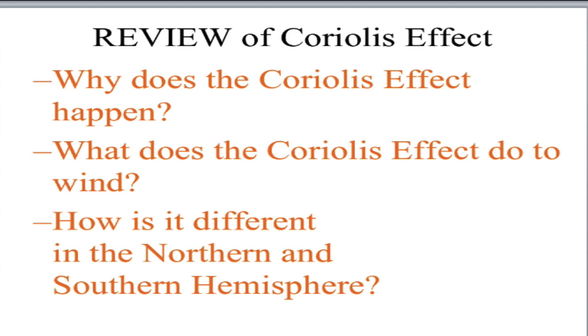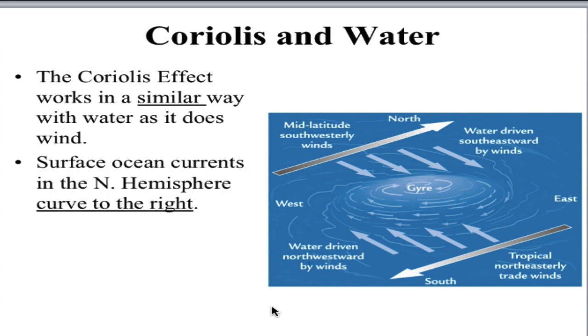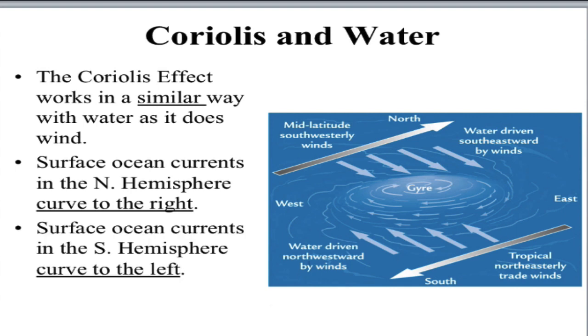Now, the Coriolis effect happens due to Earth's rotation. Let's not forget about that. It causes air to curve or bend to the right in the northern hemisphere and to the left in the southern hemisphere. Now, let's see how that impacts water. So hopefully you were able to figure out the reason why the water molecule arrows in the previous pictures are pointing to the right, and it's because of the Coriolis effect. The Coriolis effect works in a very similar way with water as it does with air. It curves water to the right in the northern hemisphere and to the left in the southern hemisphere.